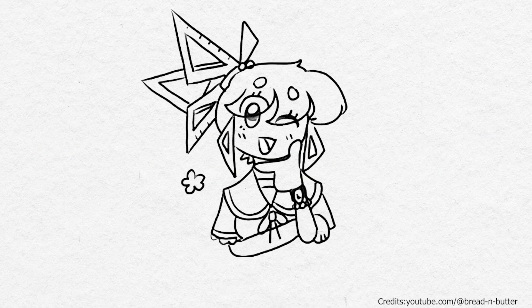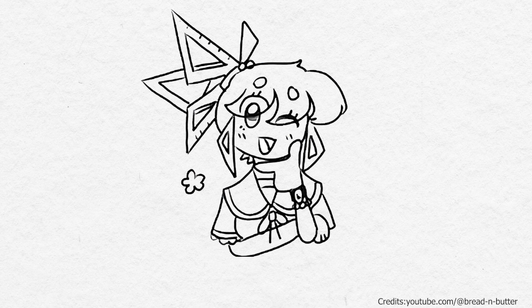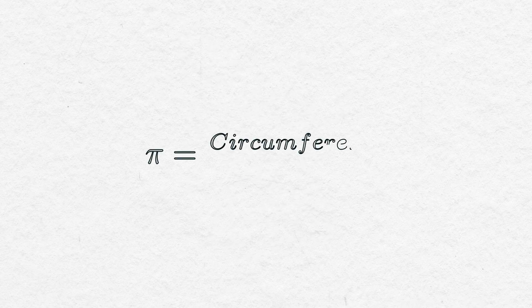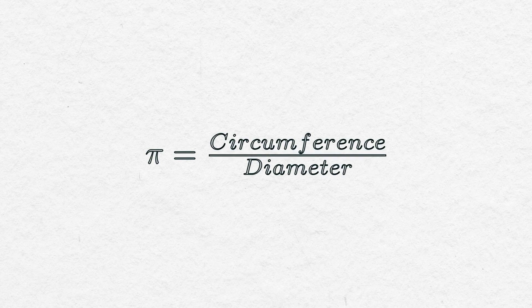So let's ask geometry then. It might have a better answer as it's the origin of pi. Here, it is defined as the ratio of a circle's circumference to its diameter.